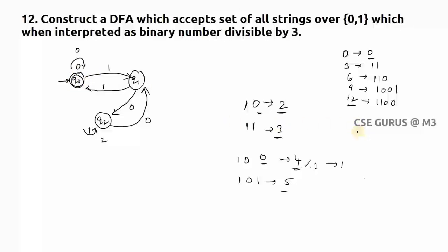Verification with 33 (binary 100001): 33 divided by 3 gives remainder 0, so it must end in q0. Tracing: q0 → q1 (1) → q2 (0) → q1 (0) → q2 (0) → q1 (0) → q0 (1). Ends in q0 — accepted. This confirms 33 is correctly recognized as divisible by 3.